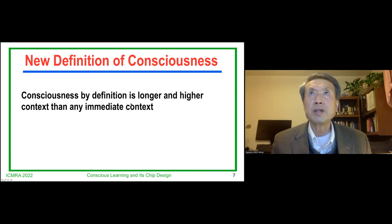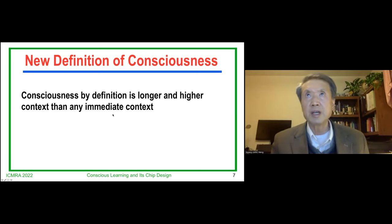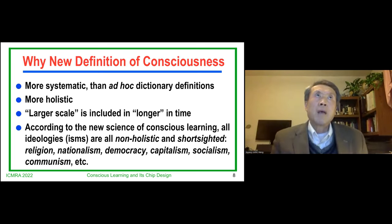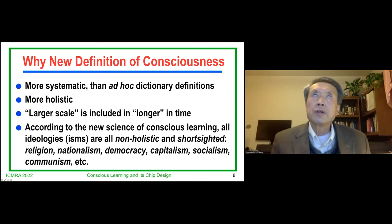Those definitions are defined by well-respected dictionaries, but I think they are ad hoc. I have a new definition from the systematic point of view because the dictionary writers don't know how to write in a computationally general way. Consciousness, by definition, is a longer and a higher context than any immediate context. Longer in time means broader. Higher means conceptually it's higher.